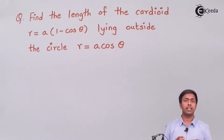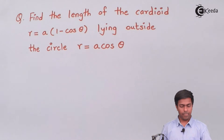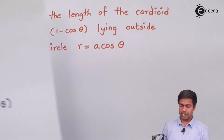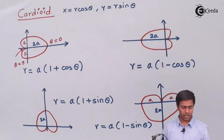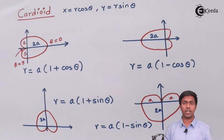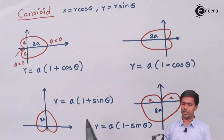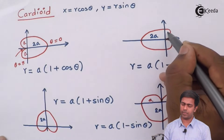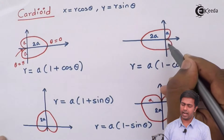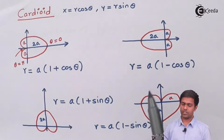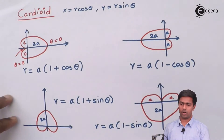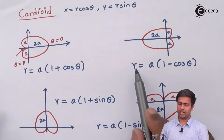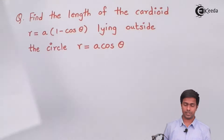Let's understand what is the shape of the given cardioid. On the screen you can see there are four types of cardioid which I covered in the previous video. So with this equation, our cardioid will look like this — this side will be 2a, this side will be a and a. I'll draw this shape for r equal to a into (1 minus cos theta).